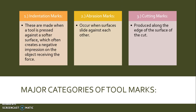Major categories of tool marks. Number one, indentation marks — these are made when a tool is pressed against a softer surface, which often creates a negative impression on the object receiving the force. Number two, abrasion marks occur when surfaces slide against each other, such as a screwdriver trying to go into a doorknob or keyhole, which could leave scuff marks. Number three, cutting marks are produced along the edge of the surface of the cut, such as from saws cutting into something.